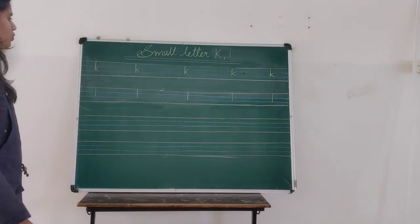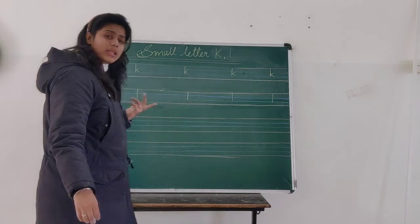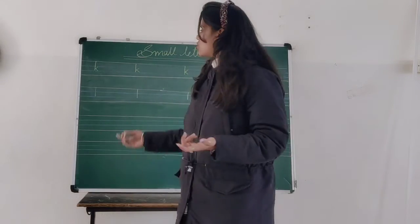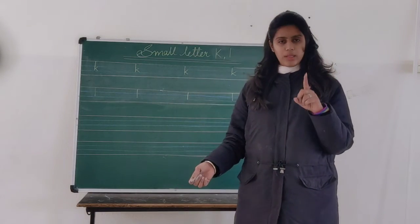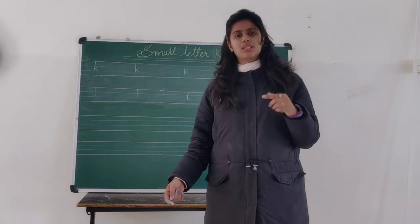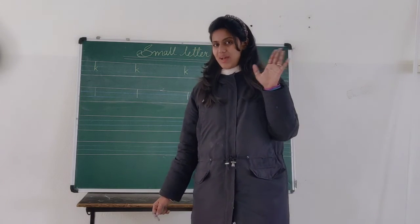This is how we have to make K for kite and L for lion. Okay students? So you have to write this in one page in GW and one page in SW as well. Okay students? Bye-bye.